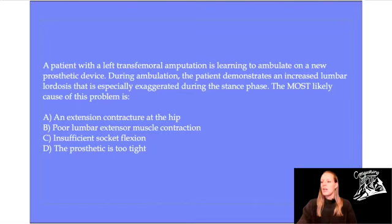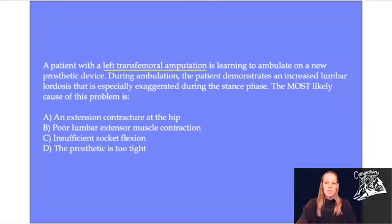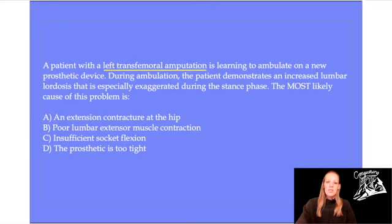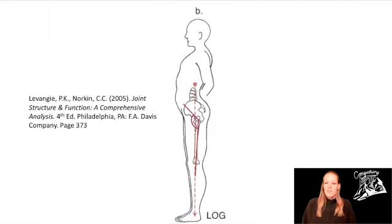If we look at our question, we see that we have a gait problem and we need to state the cause of the problem. We have a left transfemoral amputation and the deviation is that there's an excessive lumbar lordosis, occurring mainly during the stance phase of gait. Let's look at our answers and try a process of elimination. First, we have to know what a lumbar lordosis is - an exaggerated curve in the lumbar spine into extension.